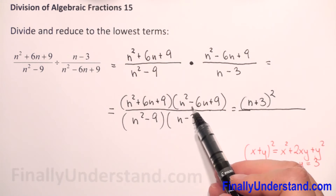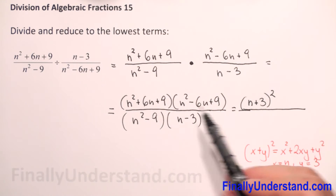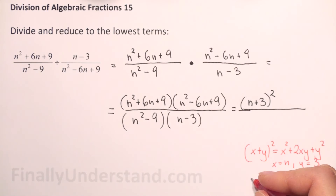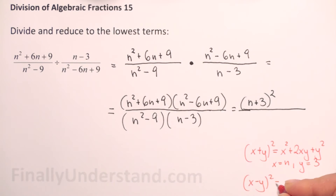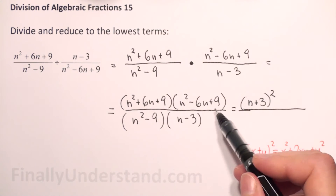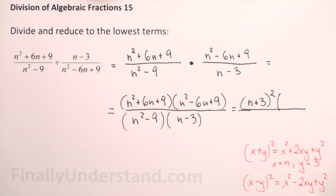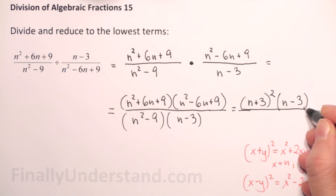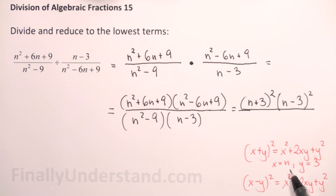Because the second parenthesis has negative signs, we have a square of a difference. Using the formula: x minus y to the second power equals x squared minus 2xy plus y squared, with x equal to n and y equal to 3, we can rewrite n squared minus 6n plus 9 as n minus 3 to the second power.